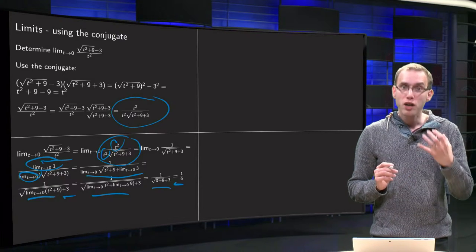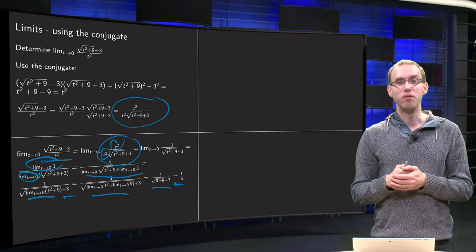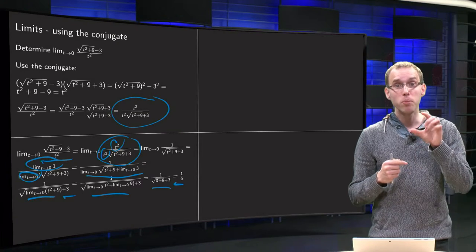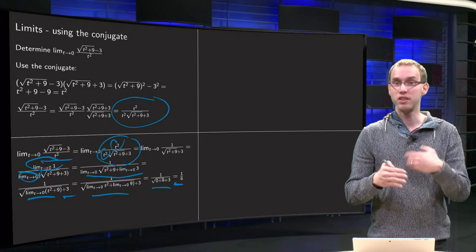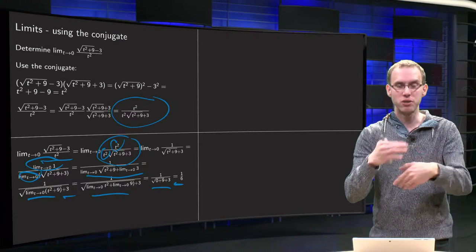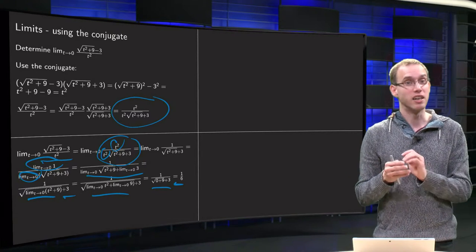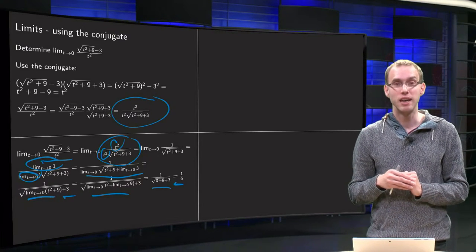So the hard work actually is in the first part where we got rid of this horrible zero over zero. After that, it is just applying all the basic rules one after each other. And there is no danger anymore in the limit.